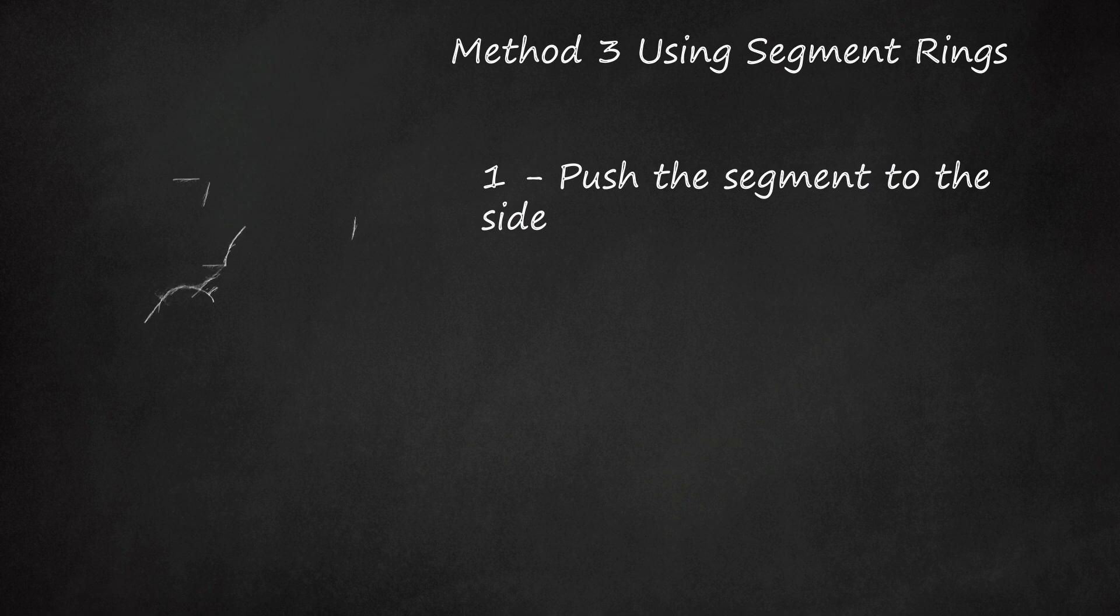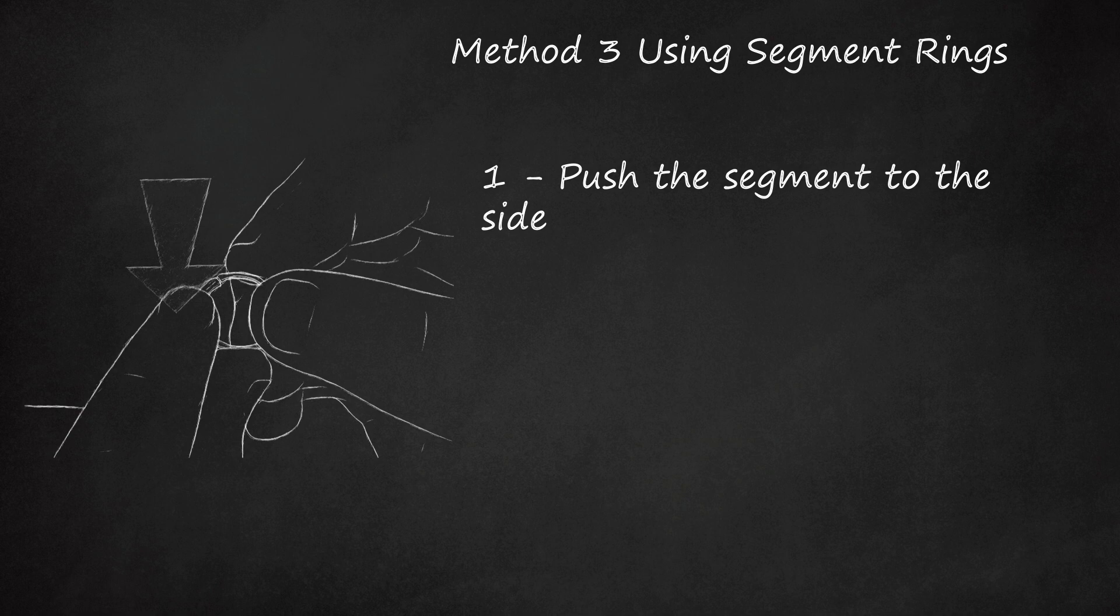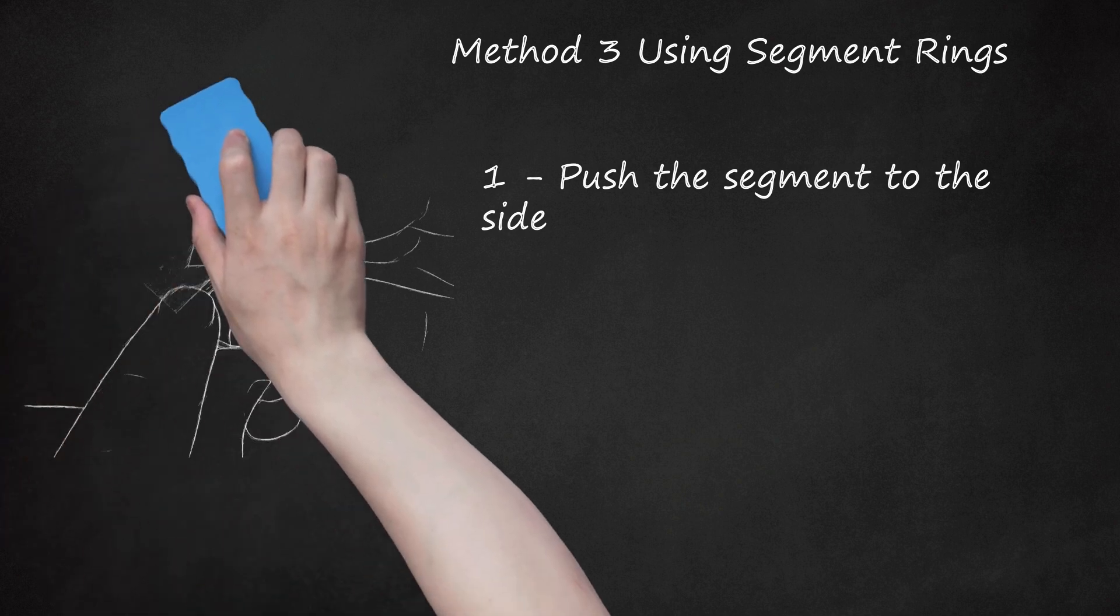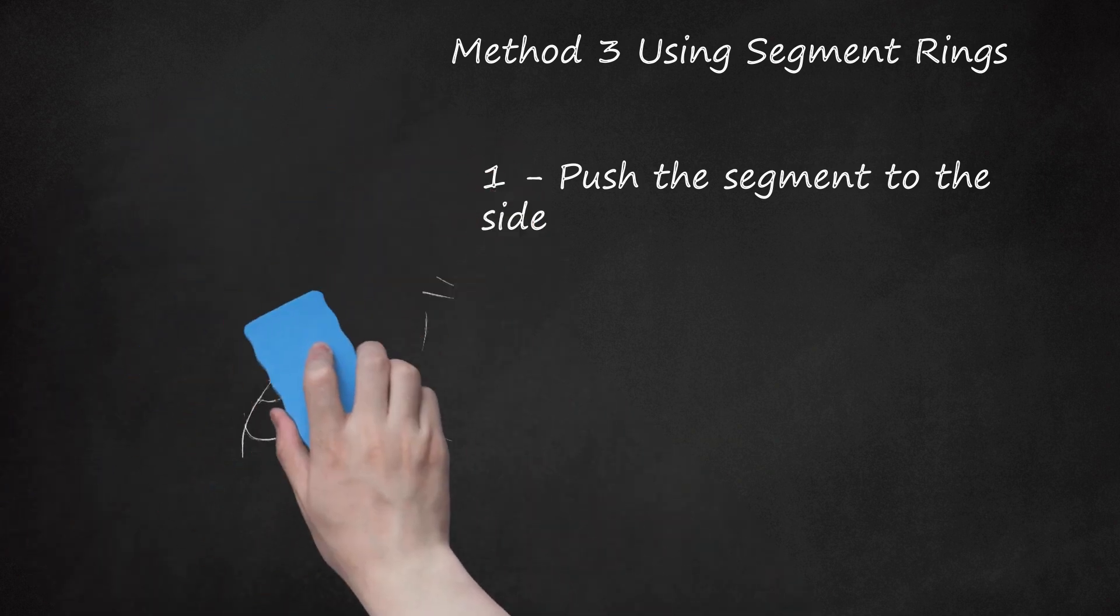The segment is held in place with prongs and pressure. By pushing it to the side, you ease the pressure off, freeing the prongs and making it easier to detach. Hold the hoop with the segment positioned on top. Grab the segment with your index finger and thumb of one hand while steadying the bottom of the ring with the other hand. Gently push the segment to one side until it pops out. Do not try to yank the segment straight out. If you try to remove the segment without releasing the pressure first, you may snap the prongs off.